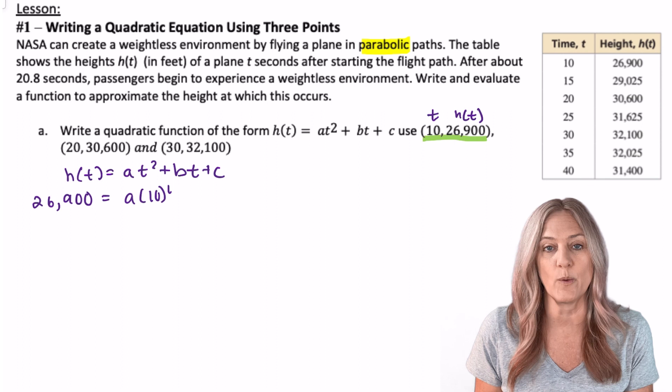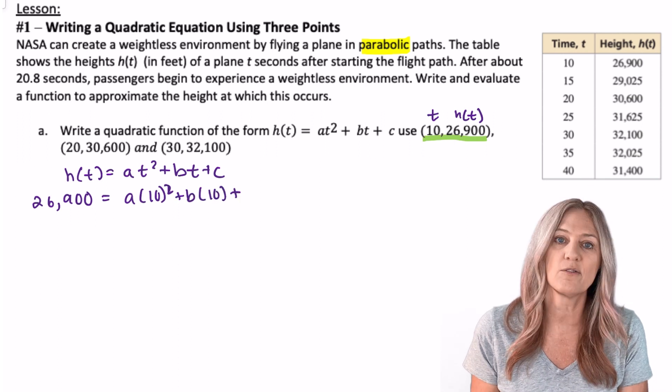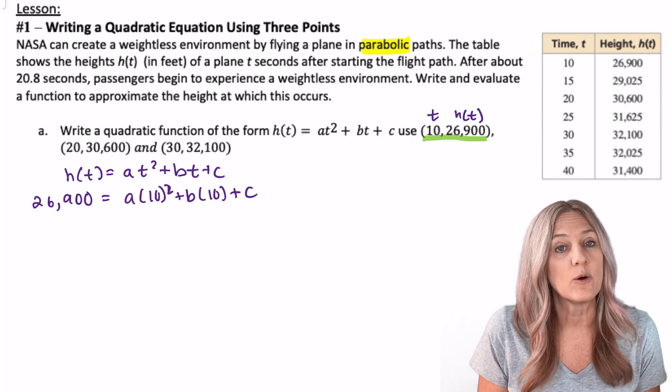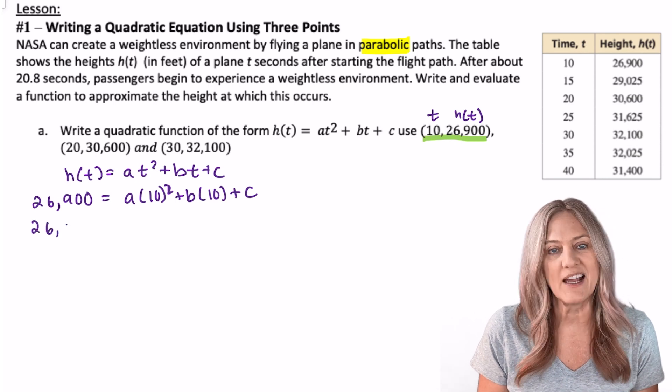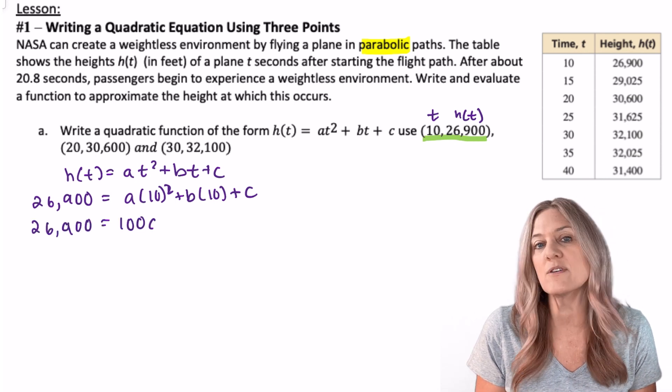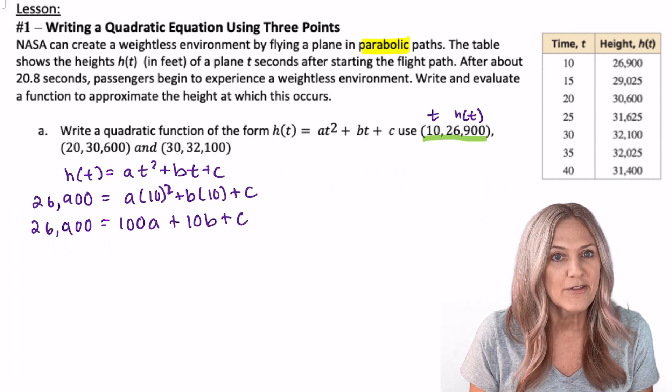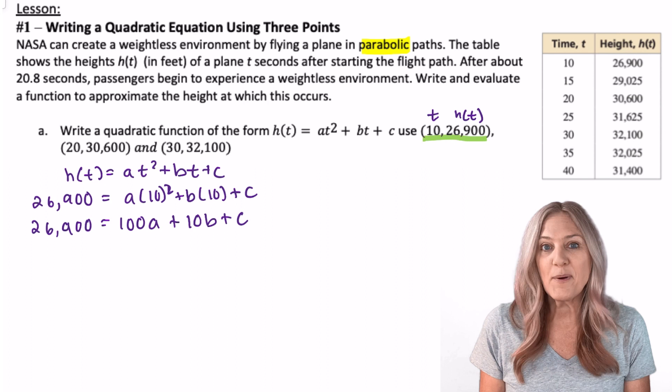So we can substitute 26,900 for h(10) or the h(t). Multiplying that out we end up with 26,900 = 100a + 10b + c. Three variables, three equations.